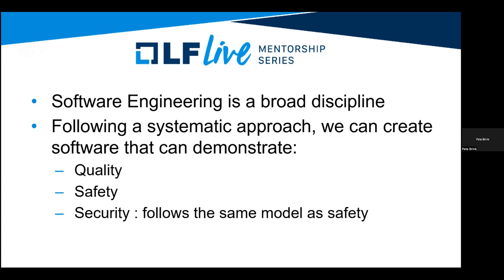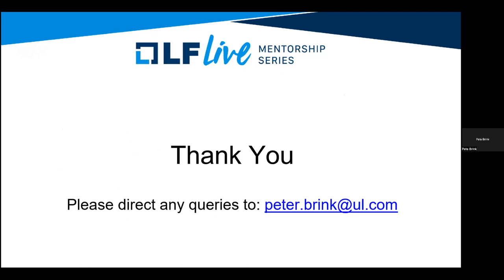So in summary — software engineering is a very broad discipline, as you saw from the number of categories of skills. Specifically, if we follow this systematic approach, we can create software and demonstrate either quality, safety, or security — or all three. It's a matter of having the processes in place in order to be able to make that assertion and demonstrate that this software is in fact done. Feel free to contact me at this email address if you have further questions.